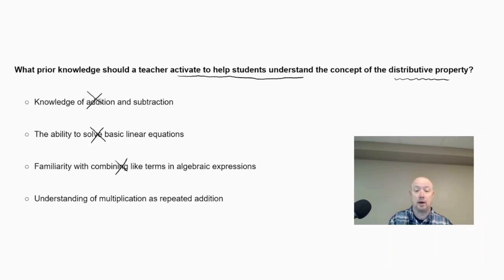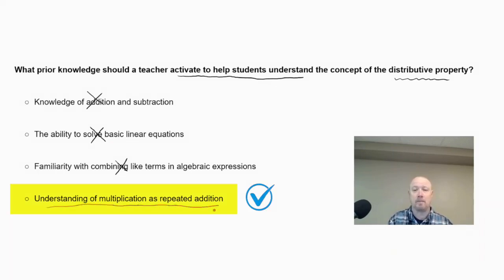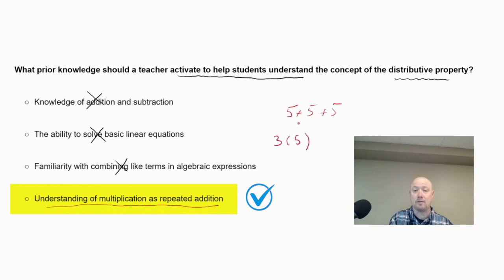The best answer is understanding of multiplication as repeated addition. For example, 5 + 5 + 5 helps students understand that this equals 3 times 5. So 3 times 5 is 15, and both expressions equal 15.